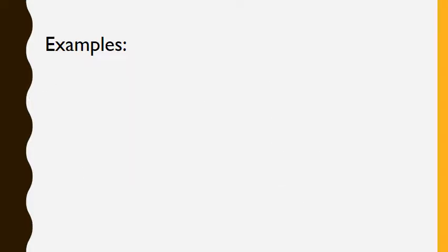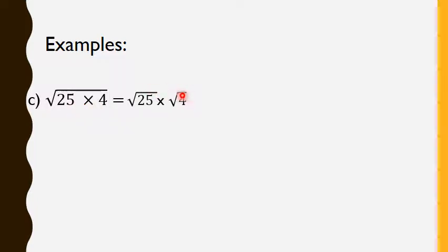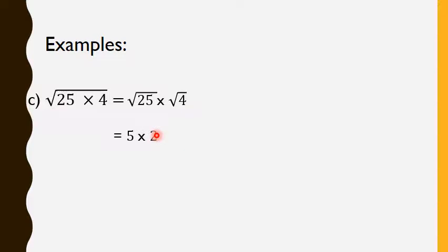Another example: radical 25 times 4. We can directly apply the rule: radical 25 times radical 4. 25 is 5 squared, so radical 5 squared is 5. And radical 4 — 4 is 2 squared, so radical 2 squared is 2. So, 5 times 2 equals to 10.